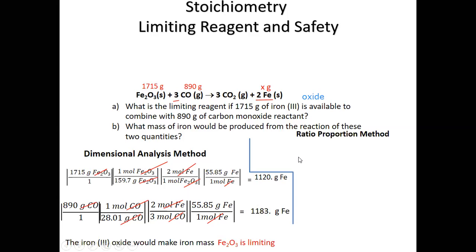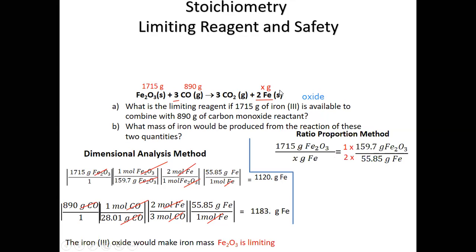Using the ratio-proportion method for Fe₂O₃: given 1715 grams of Fe₂O₃ over x grams of Fe. Right-side fraction uses molar mass 159.7 g for Fe₂O₃ and 55.85 g for Fe. Mole coefficients: 1 for Fe₂O₃, 2 for Fe. Cross-multiply: x × 1 × 159.7 = 1715 × 2 × 55.85. Divide each side by 159.7 to get 1120 grams of iron.